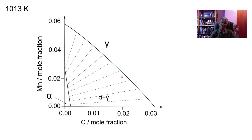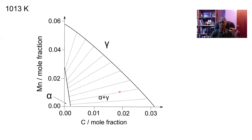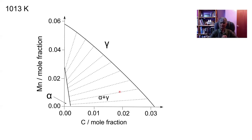At the termination points of each tie line the chemical potentials of manganese, carbon, and iron are identical in γ and in α. We can calculate these tie lines if we have appropriate thermodynamic data, of which we have plenty, and as a last resort we can do measurements to find the thermodynamic data to place these tie lines. So assume that we have all these tie lines.